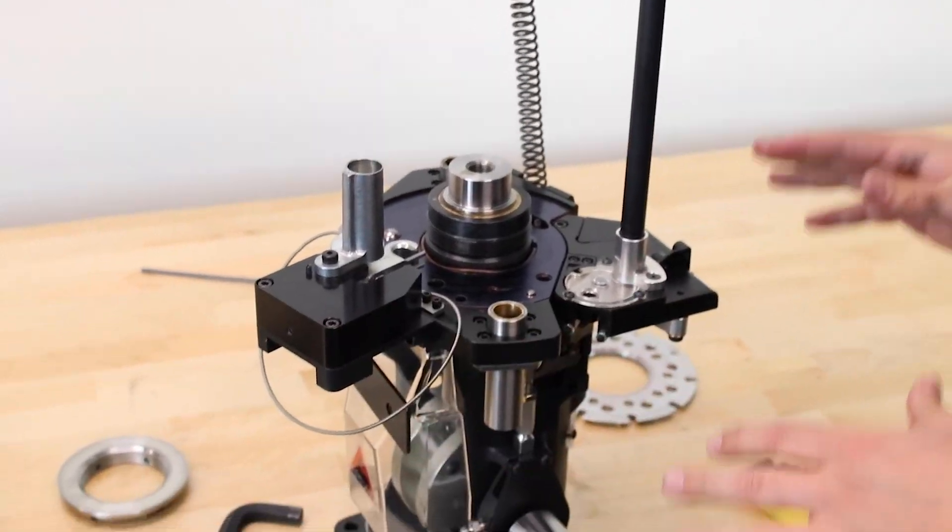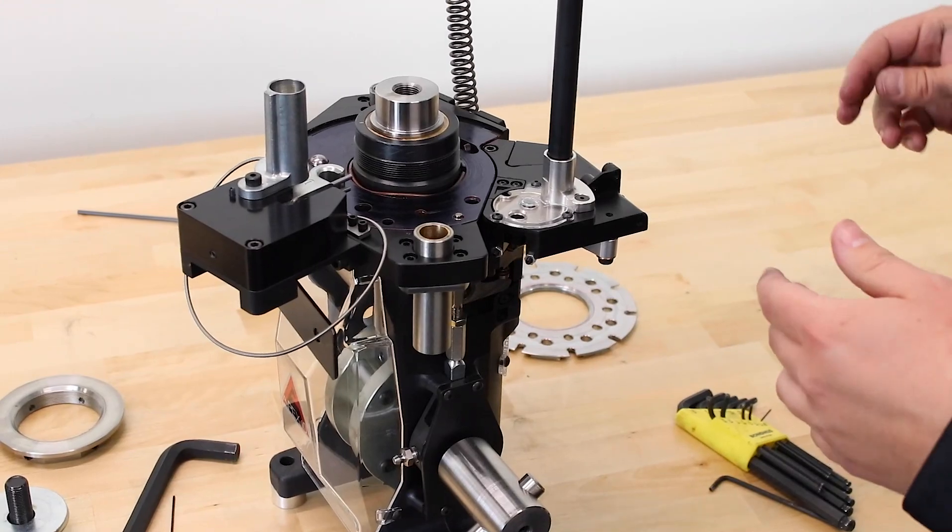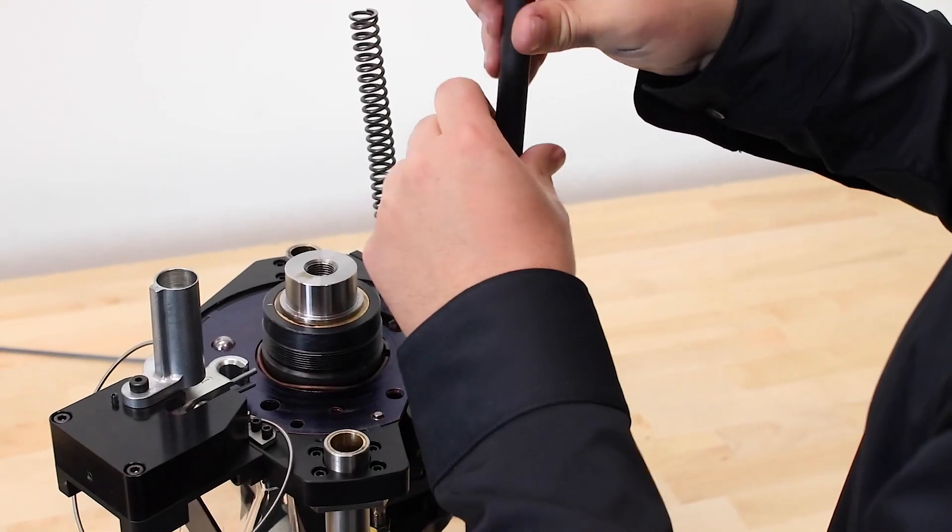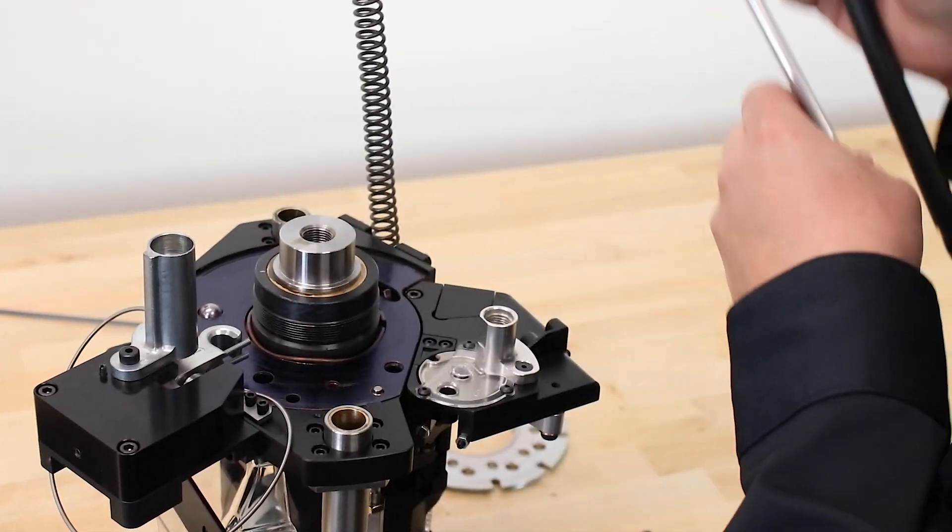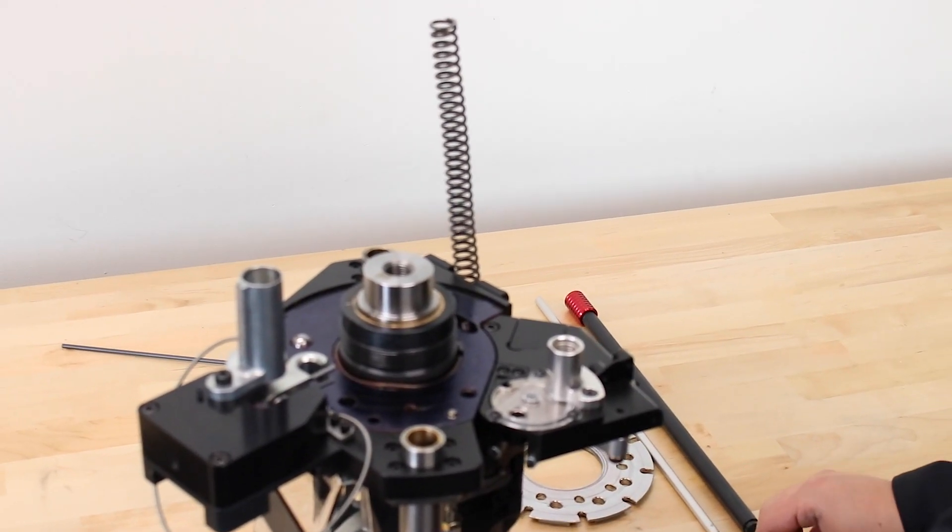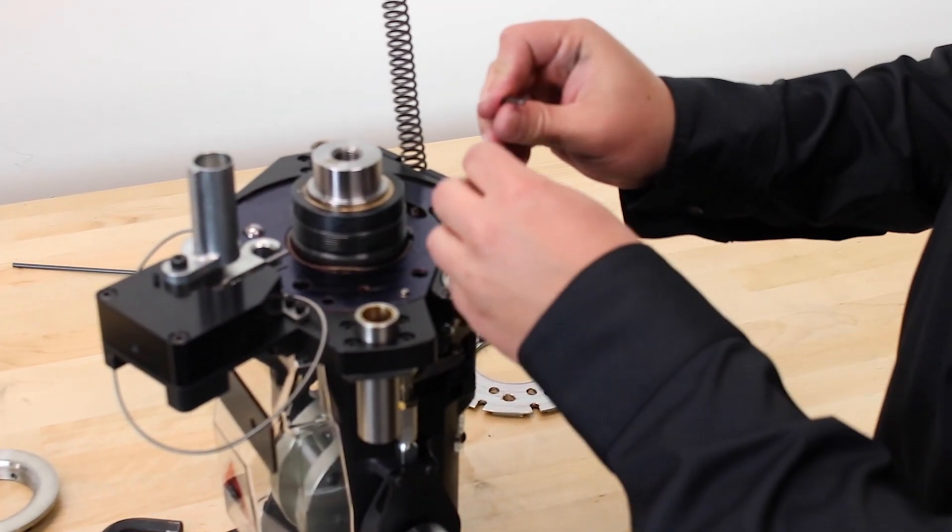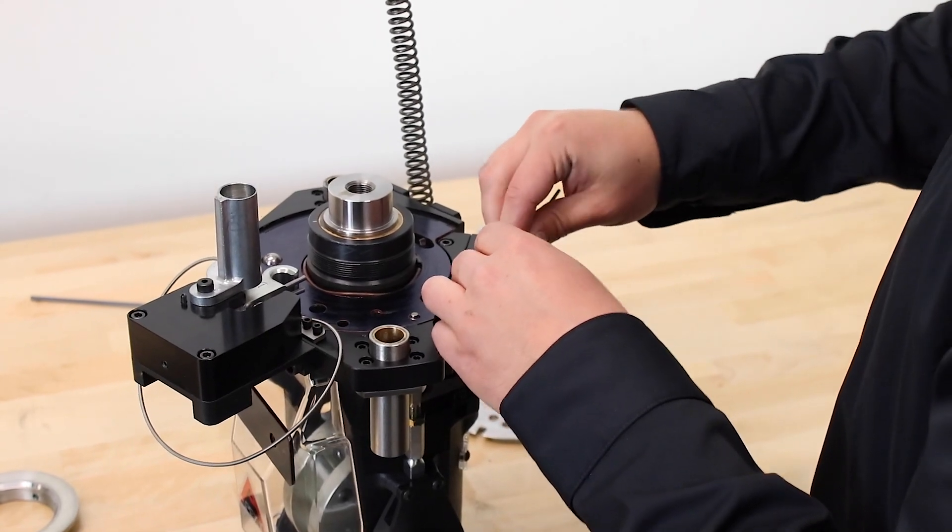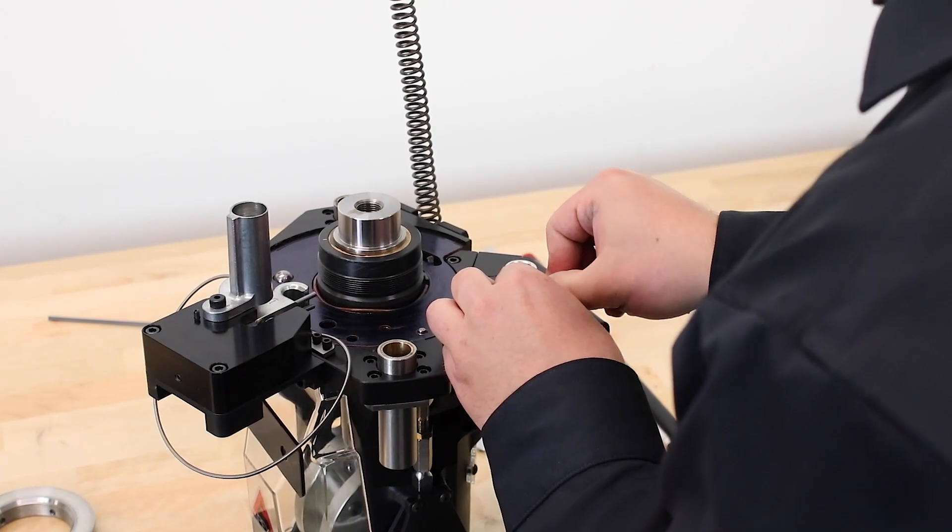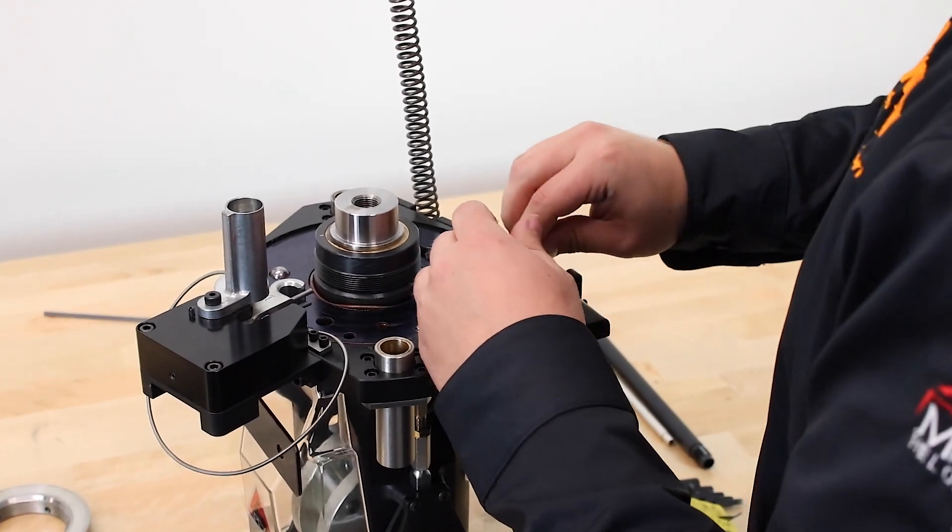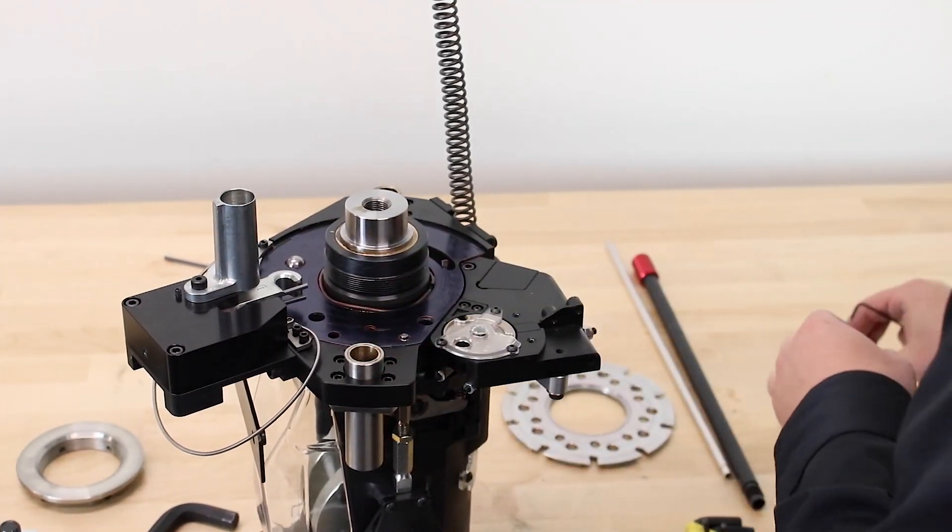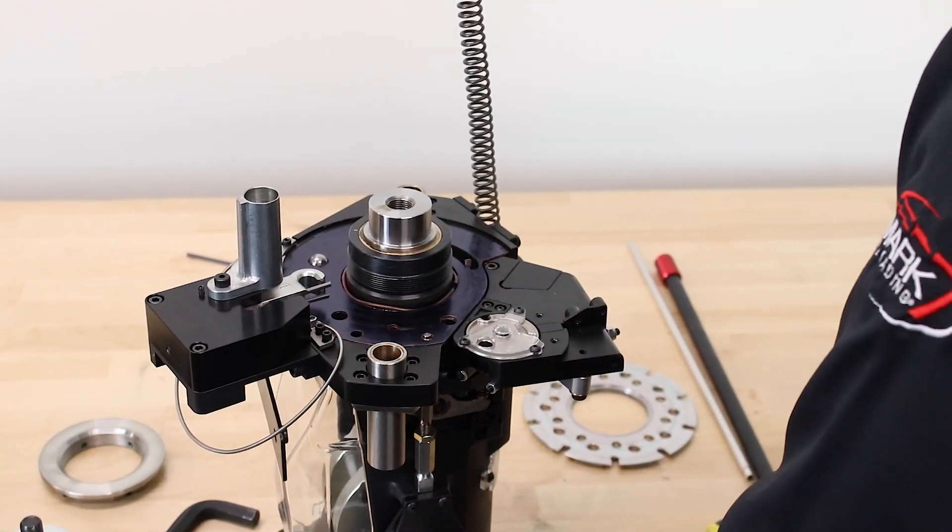Now what I'm simply going to do is rotate the press because the main focus of this video is the priming system. So what I'm going to do now is remove the blast shield, internal priming tube, and set it inside. Now I'm going to open and remove the tube adapter. Once again set it aside, it is not applicable here.